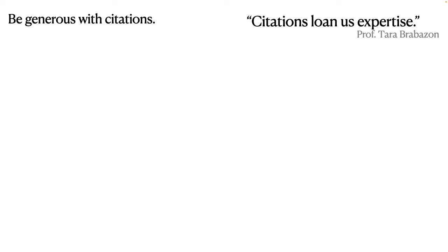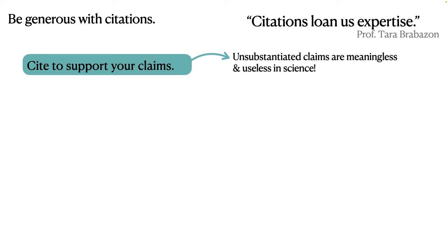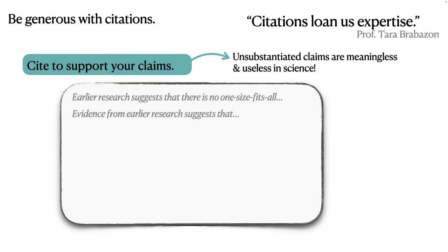So when should you cite other people's work? Well, first, you should cite to support your claims. So remember that any unsubstantiated claims are simply meaningless and useless in science. So for example, let's say that you write a sentence like earlier research suggests that there's no one size fits all or evidence from earlier research suggests that this and that. And if you don't add citations in sentences like that, then the question becomes which research or who suggests that?